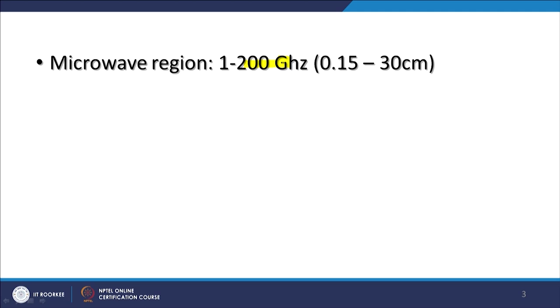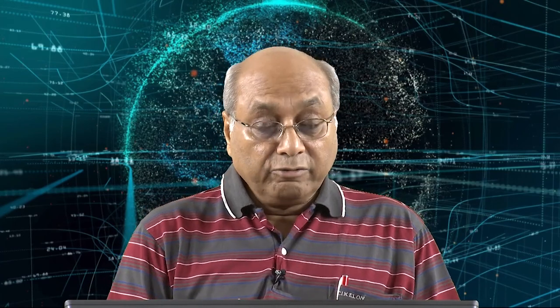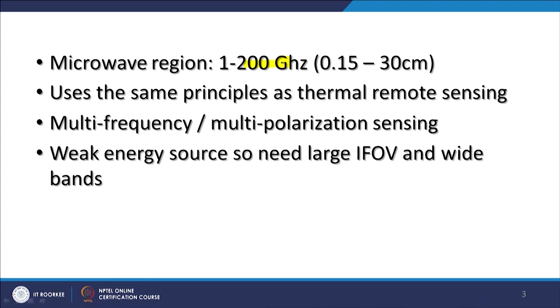Passive microwave remote sensing uses the same principles as thermal remote sensing — objects above absolute zero emit energy which can be recorded by sensors working in the thermal infrared part of the electromagnetic spectrum. Similarly, microwave energy is also emitted by objects, but it is very low energy. Nonetheless, it can be recorded. There have been multi-frequency and multi-polarization sensors operating in the passive microwave region, though it is a weak energy source.